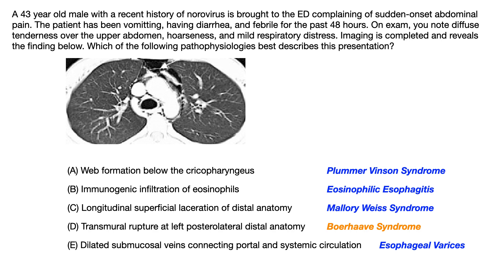Choice B — immunogenic infiltration of eosinophils — refers to eosinophilic esophagitis, where elevated IgE causes eosinophils to infiltrate the esophageal mucosa. On imaging you'd expect longitudinal mucosal furrows or esophageal rings; descriptively the lumen may be narrowed, the mucosa fragile or corrugated. Clinically this presents as dysphagia, retrosternal chest pain, nausea, vomiting, and weight loss, and is associated with asthma and IgE-mediated conditions.